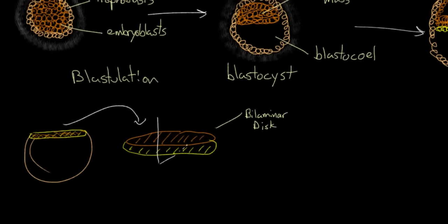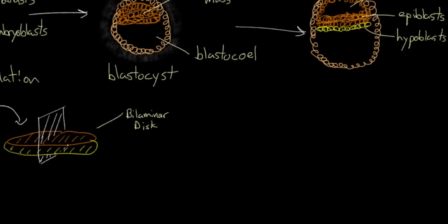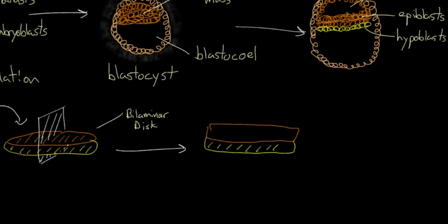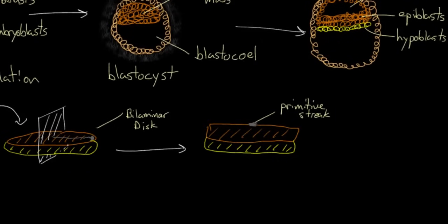We're going to draw a plane through the disk and take a cut view through it. Looking at a slice of the bilaminar disk, we notice something forming on the edge — a little bit of streakiness that kind of splits our pancake right in two. You can think of it as pouring a little streak of syrup along the top of the pancake and dividing it into two halves. This streak has a name: it's called the primitive streak. The formation of the primitive streak marks the beginning of the next stage of early embryogenesis, called gastrulation.